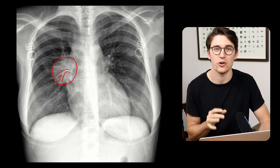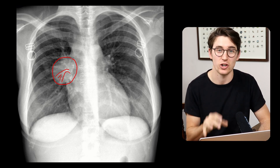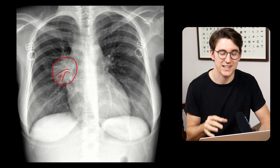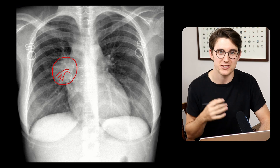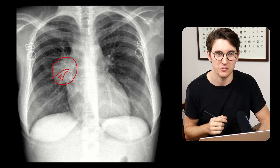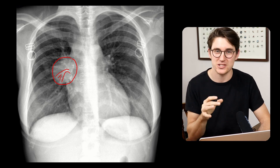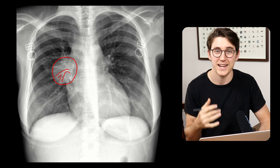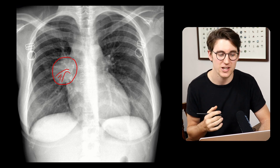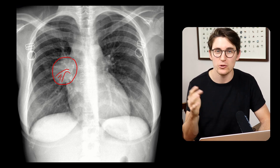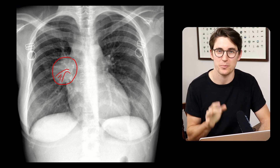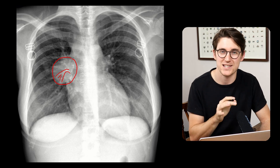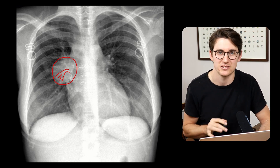If this is the case, we know that the mass is not sitting within the hilar region — it's either anterior or posterior to the pulmonary hilum. That's because if the mass was within the hilum, it would be abutting or encasing those vessels and we would lose the silhouette of that pulmonary vasculature, making it impossible to distinguish what's mass and what's vessel.